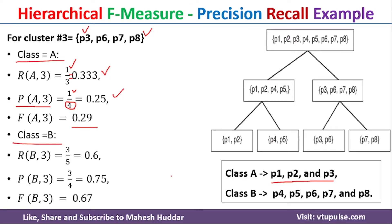Class B contains 5 objects. The recall of B3: out of the 5 objects in class B, P6, P7, and P8 are present in cluster 3, so the numerator is 3, divided by 5 (objects in class B), giving 0.6. Precision of B3 equals 3 divided by 4 (objects in cluster 3), which equals 0.75. The F-measure of B3 equals 0.67. Once you know recall and precision, we can easily calculate this.